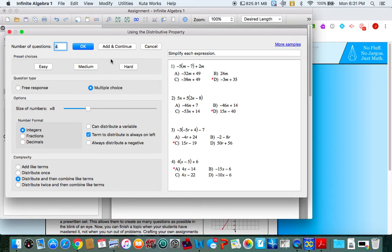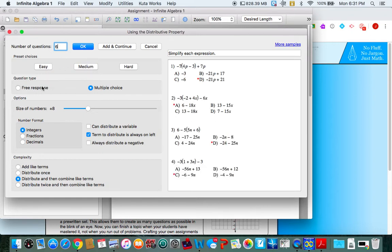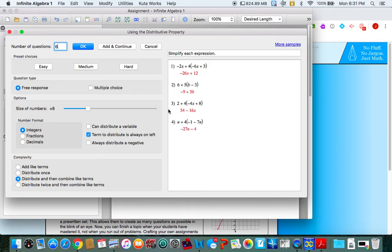Now, I don't want them all to be multiple choice so I'm going to say give me six more problems, medium difficulty and let's make it free response. Again, you can see examples to the right and if I don't want to add any more questions or change any more options, I just click OK.